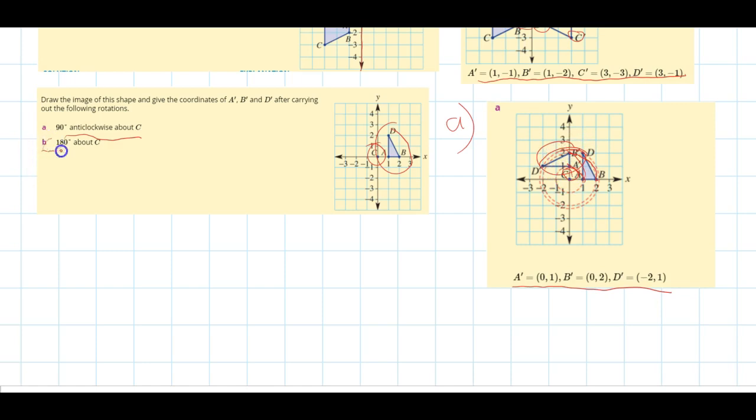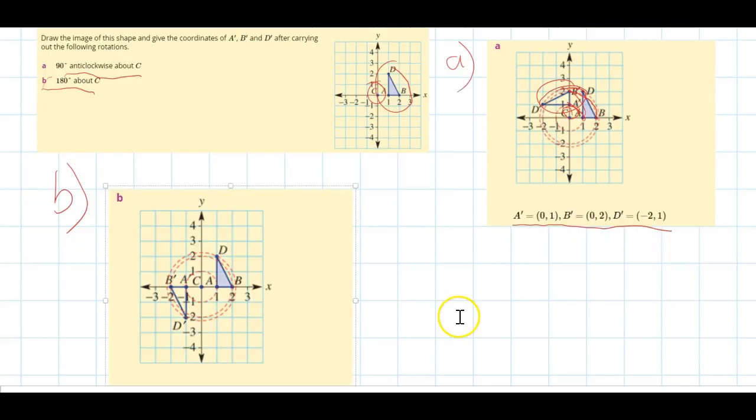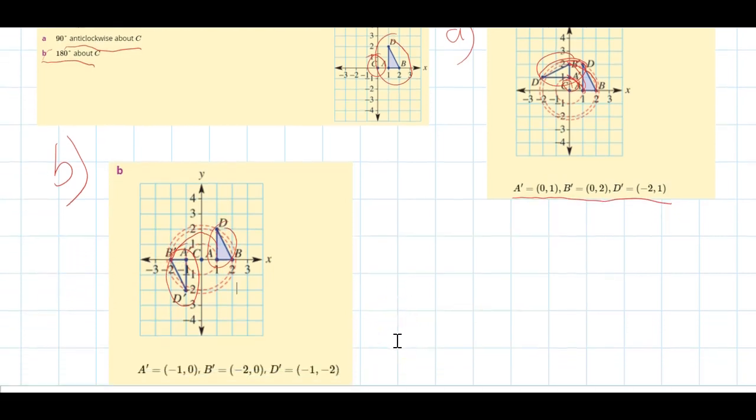Now let's look at B if we have 180 degrees about point C what that would look like. We'll put that one in just down here. Now we have our image here which we have rotated 90 and then 180 which gives us our new image down here. We'll put the new coordinates below which show us that example.